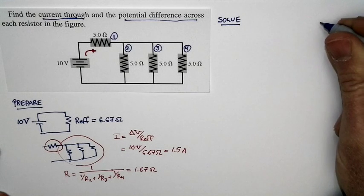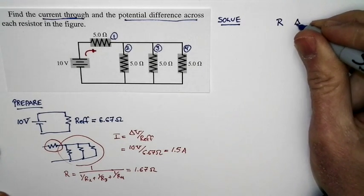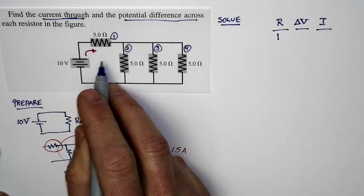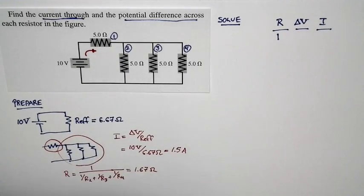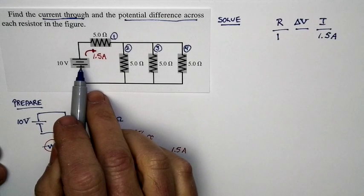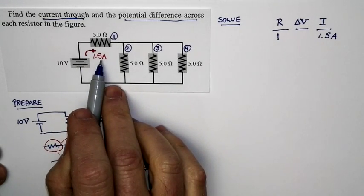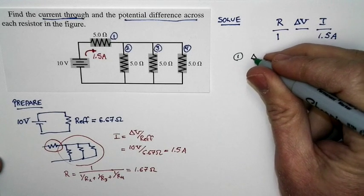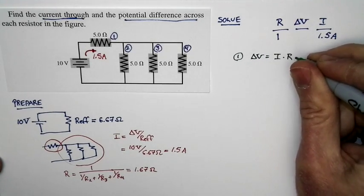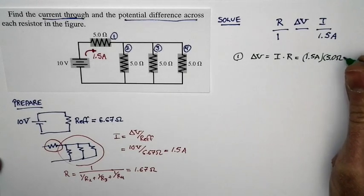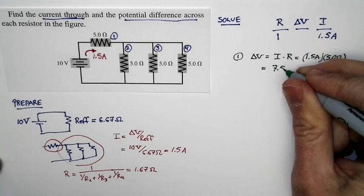We're going to make a table of resistors, potential difference across them, and currents through them. First, let's look at resistor R1. It has 1.5 amps through it because 1.5 amps comes out of the battery. With 1.5 amps through a 5 ohm resistor, the potential difference across R1 is current times resistance: 1.5 amps times 5 ohms equals 7.5 volts.